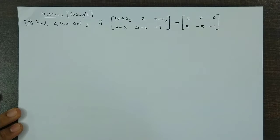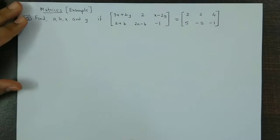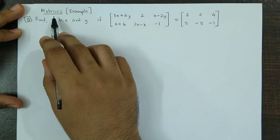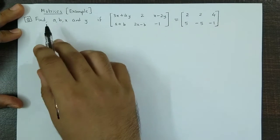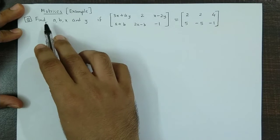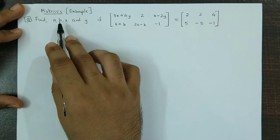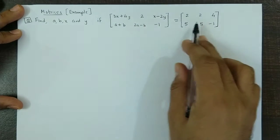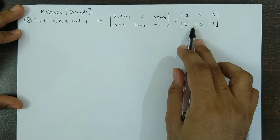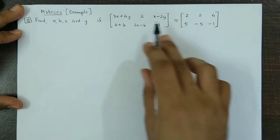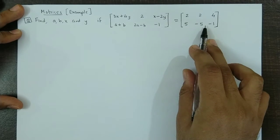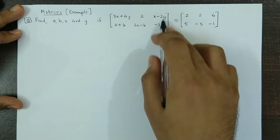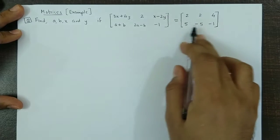Hello and welcome back. We now discuss an example based on matrices. Here we have to obtain the missing values A, B, X and Y if these two matrices are equal. Both matrices are of the same order — two rows and three columns, that is two by three.